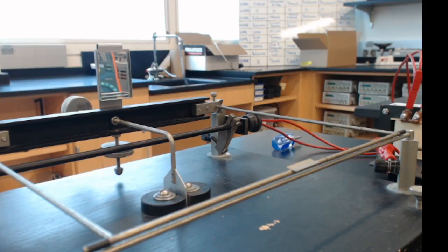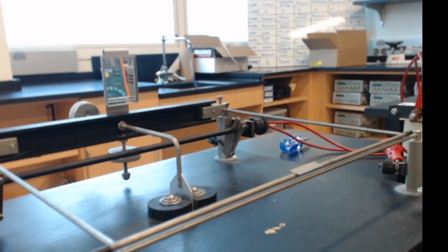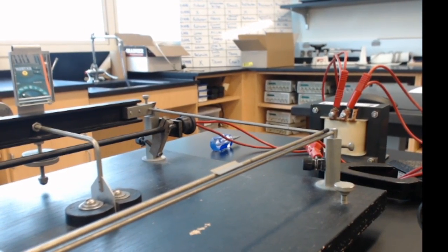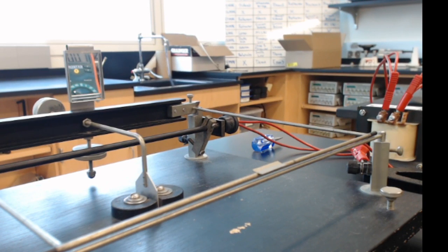Let me show you more detail about the current balance apparatus. Here you can see the two wires—they're very close together in parallel but they're not touching each other. Ideally, we want the space between them to be about the diameter of a wire.